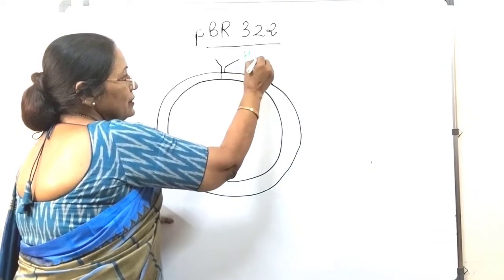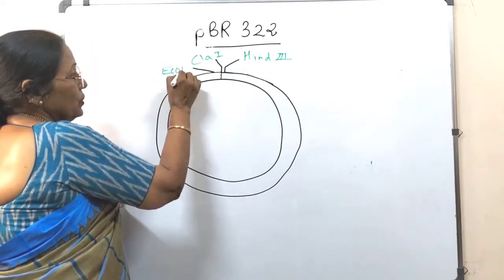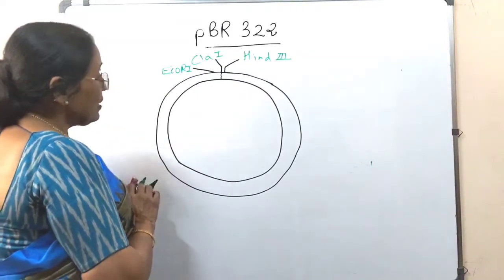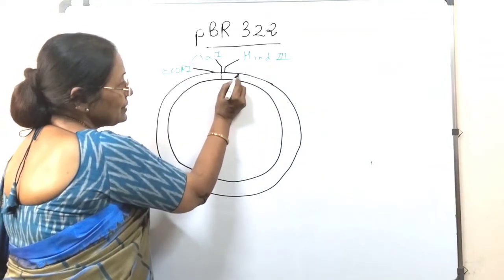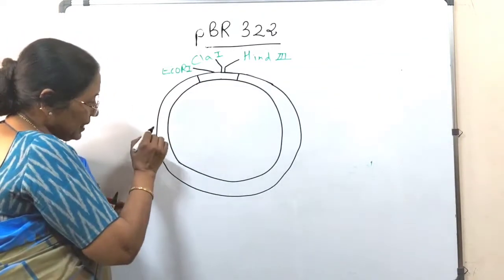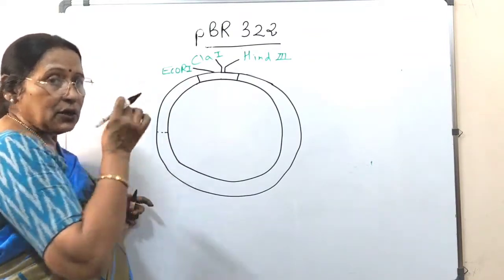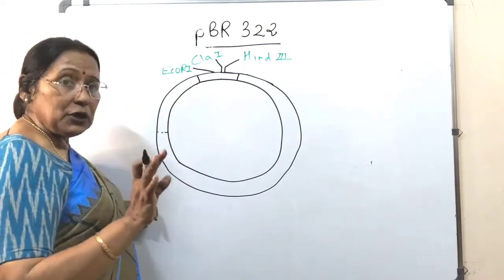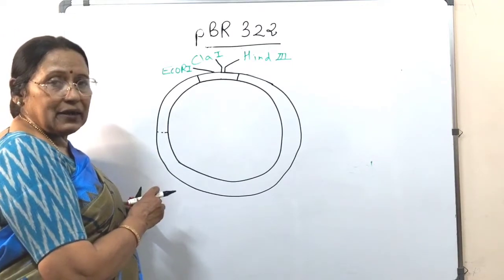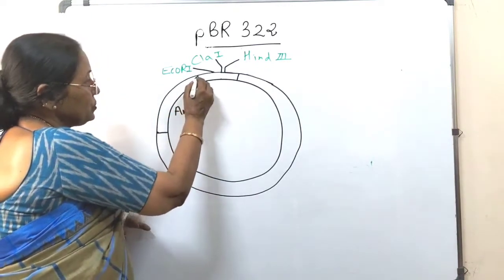This is Hind 3 and this is CLA1. Close to it lies EcoR1 and it is the restriction site here. Now, what will you do? From this 12 to this side towards your right, draw one line and take it a little left. After that, take this your wall clock's 9 o'clock point. This will help you draw the ampicillin resistance gene. Not ampicillin gene, it is not producing ampicillin. It is producing a product which will give the host resistance to antibiotic ampicillin.